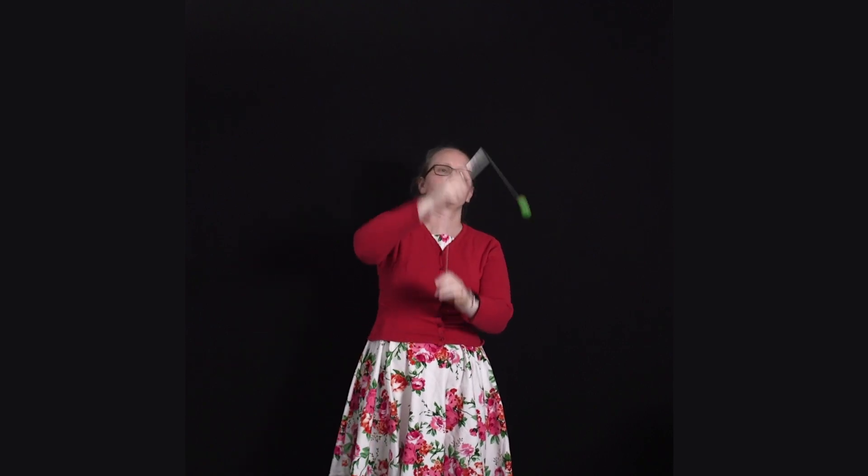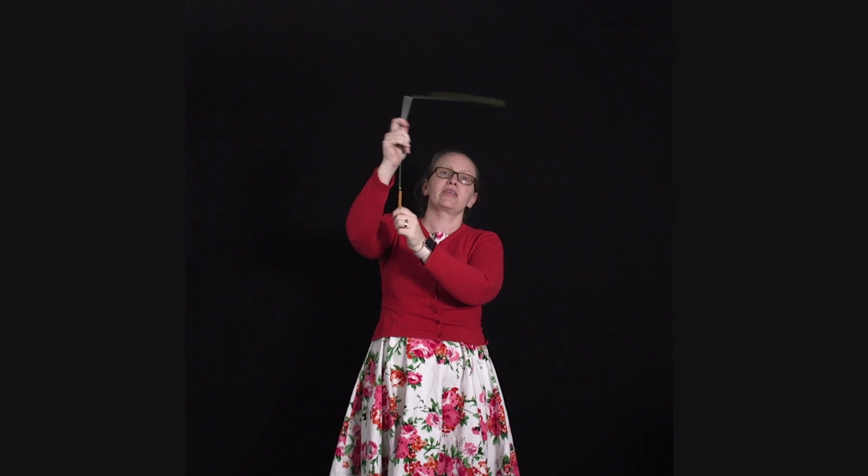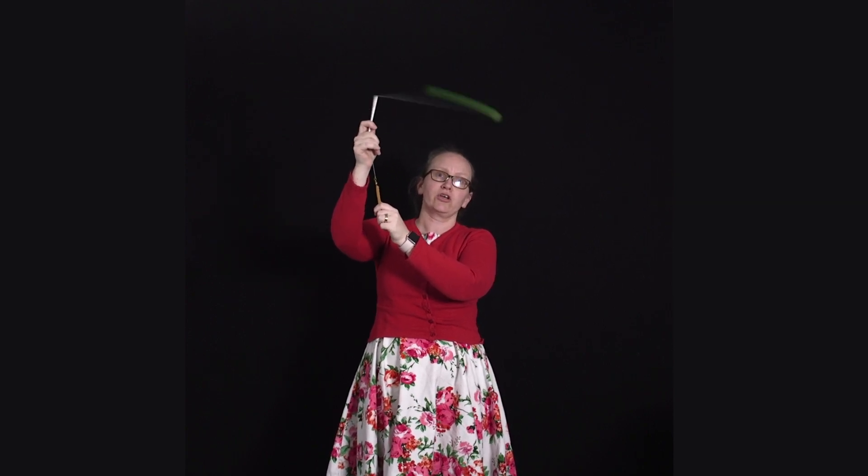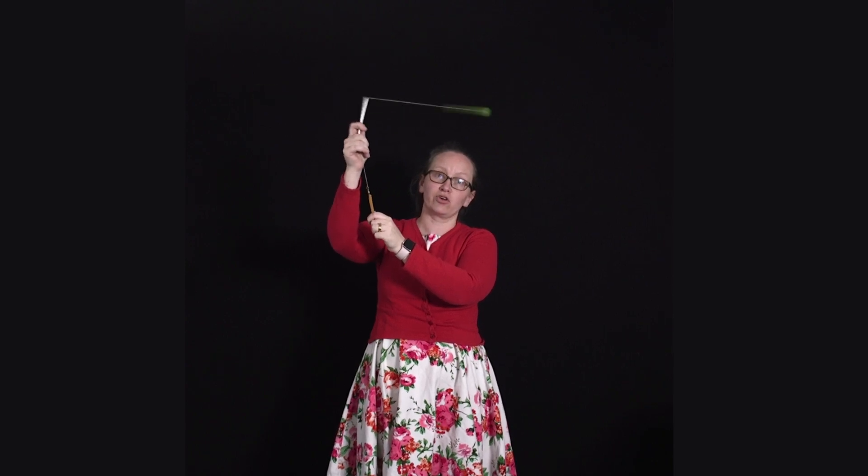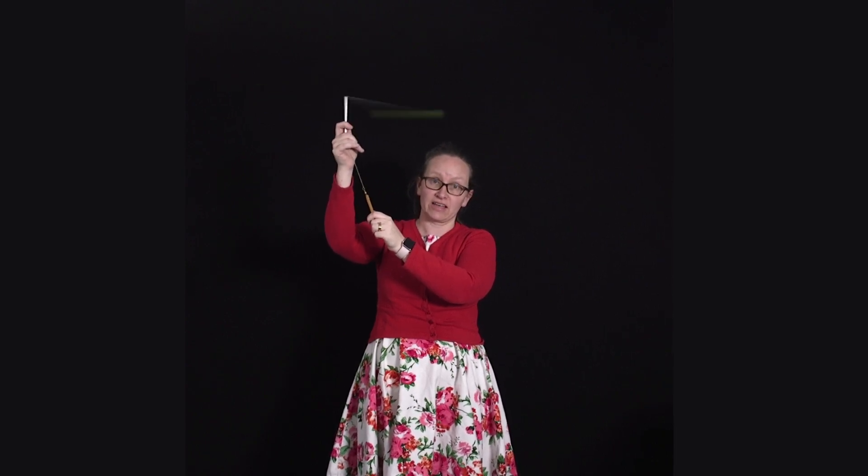So what you're going to do is get students to swing the mass around. They'll be measuring the period of the motion, so I'd recommend getting them to count how long it takes the ball to swing around 10 times, and they'll be using that to show a linear relationship.